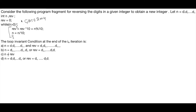This question was asked in year 2004. They are asking us to consider a program fragment for reversing the digits in a given integer to obtain a new integer. The program reverses the given integer to obtain a new integer. Let n equal d1 d2 d3 up to dm — meaning there is a variable n and we need to assume some digits for it. For example, if n is equal to 1234,